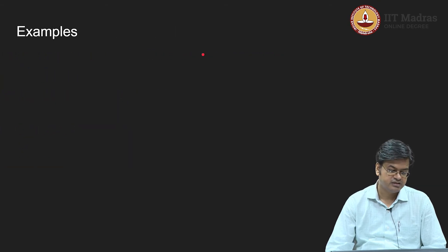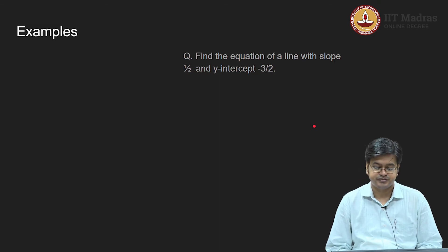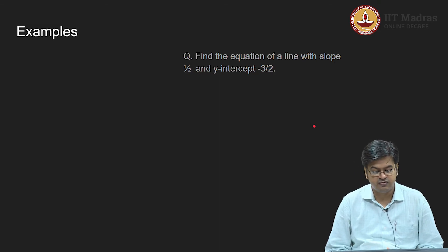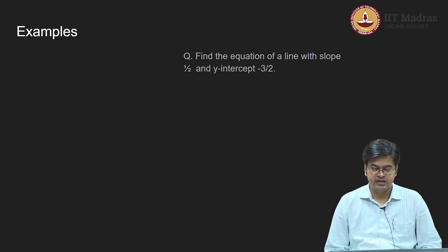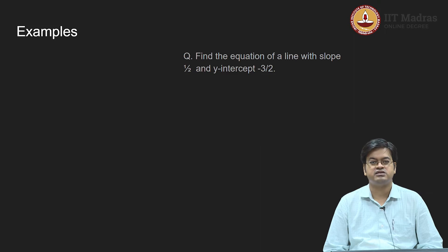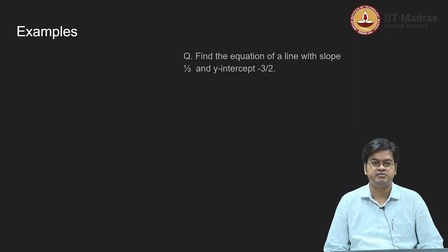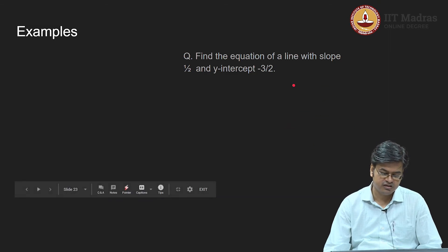Here is a typical example: find the equation of a line with slope one-half and y-intercept minus 3/2. Things are very easy because you just need to know y equals mx plus C. Here m is one-half and C is minus 3/2, so the equation of the line will be y equals (1/2)x minus 3/2. Let us verify the result using graphics.